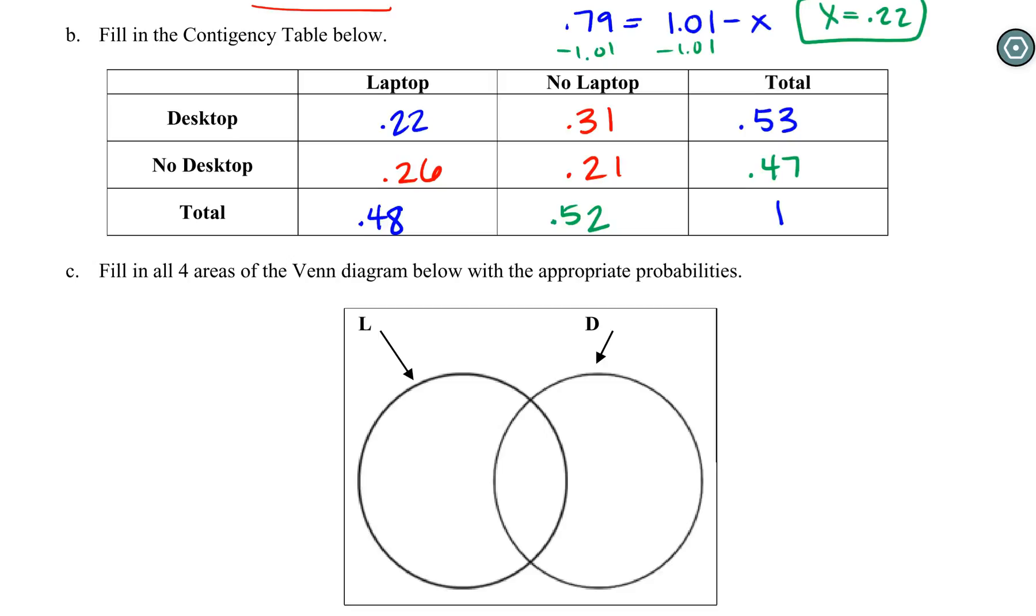Now we want to use this to fill in our Venn diagram. I'd like you guys to take a minute if you didn't do this question already—pause the video and see if you could correctly fill in the Venn diagram. Coming back, remember the Venn diagram only has the 'and' probabilities in it, nothing else. The most common mistake I see from students is to put this 0.48 for all the laptops in this section, when really that is the probability of laptop and not desktop.